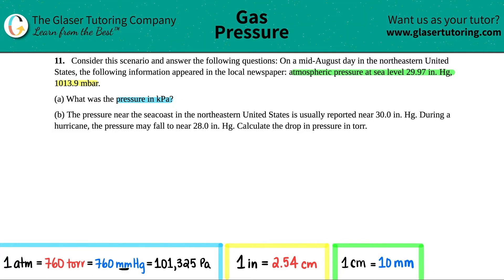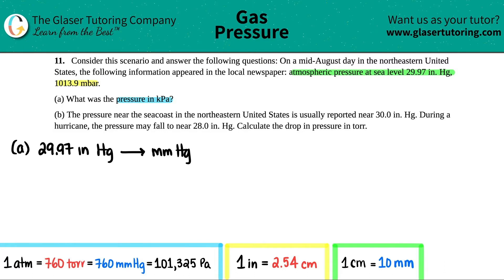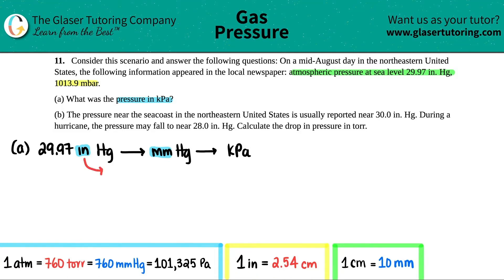Generally the unit is mmHg — millimeters of mercury — but here we have inches. So the first step for letter A is to convert 29.97 inches of mercury into millimeters of mercury. We're just working with distance units. We go back to basic chemistry: one inch equals exactly 2.54 centimeters, so we go to centimeters first, then to millimeters.